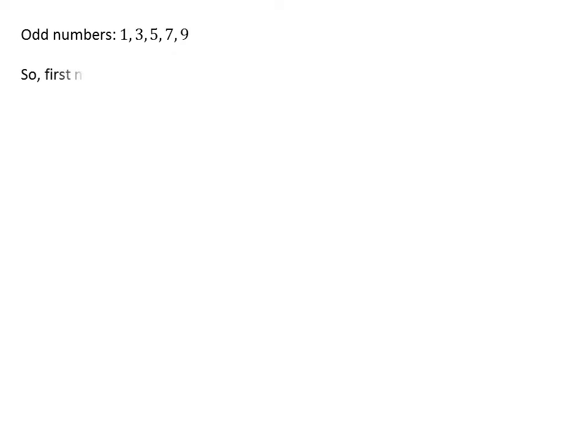The first 5 odd numbers are 1, 3, 5, 7, and 9. As you can see, the fifth odd number is 2 times 5 minus 1. Similarly, first n odd numbers are 1, 3, 5, and so on up to 2 times n minus 1.